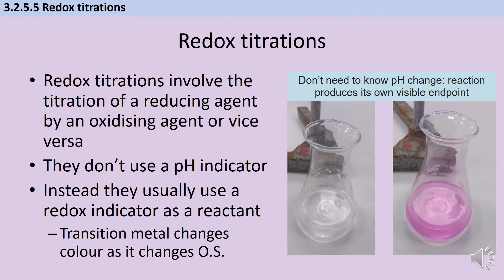The biggest difference is how we know where the end point is. Redox titrations involve the titration of either a reducing agent by an oxidizing agent, or vice versa, and they don't need a pH indicator because they usually have a redox indicator. The reactant involves a transition metal, which has variable oxidation states and therefore a color change. Not every transition metal is appropriate — just as we'd never use universal indicator in acid-base titrations, we need a really clear color change.